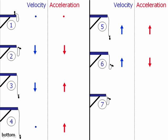Motion seven is another turnaround point. You've reached the highest point in your jump and you're about to fall again for another bounce. At that point, for an instant, your velocity is zero. But again, your acceleration vector cannot be zero, or you would just stay there hovering in the air — that would be spooky! Right before this turnaround point you were headed in the upward direction; right after, you'll be headed back down. That's a change in the downward direction.